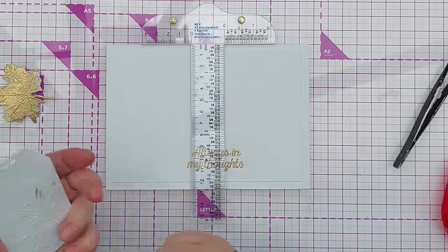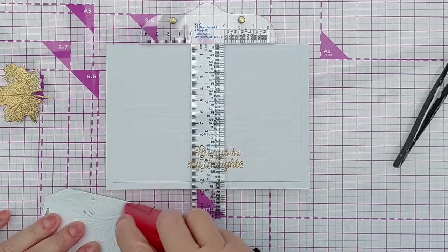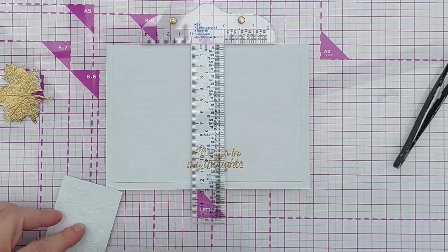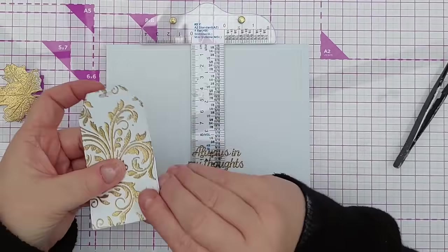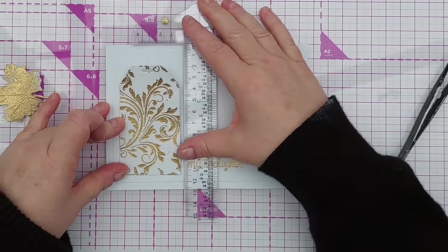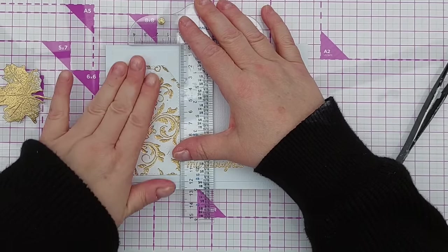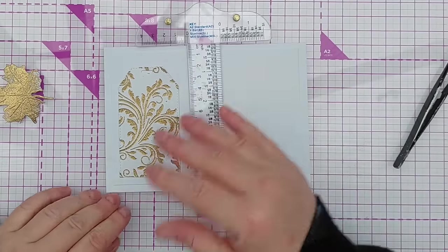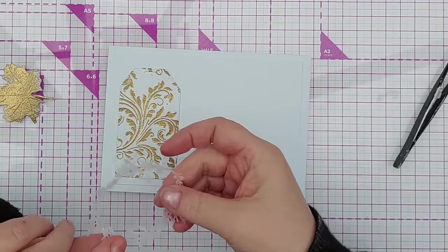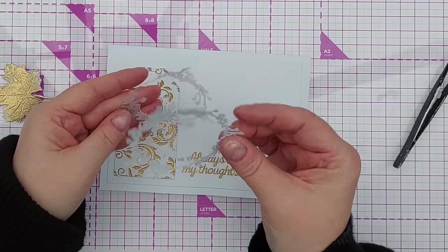Okay, so I'm going to start assembling. I'm going to add my tag with some tape runner. It's going to go about there, but I'm going to use this to make sure it's straight before I press it down. Yep, that looks good.